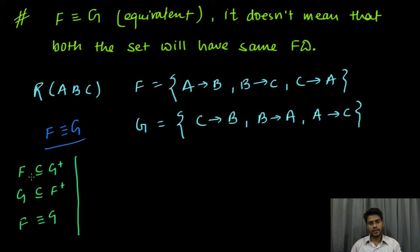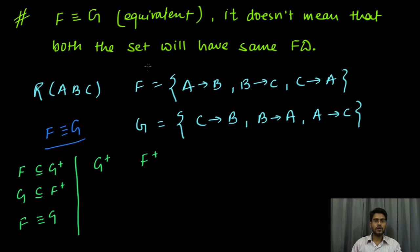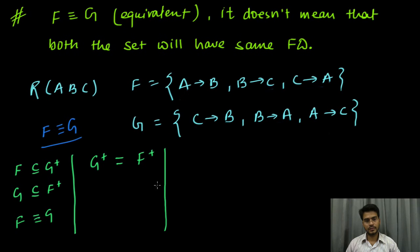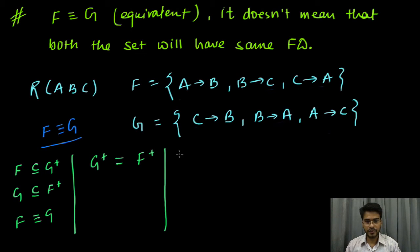Alternatively, we can find out g plus and f plus — the closure of the set of functional dependency g and the closure of the set of functional dependency f — and if these two are equal then we say that f is equivalent to g. While solving, we will use the same approach but done step by step to make sure we do not make any error.